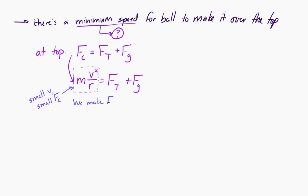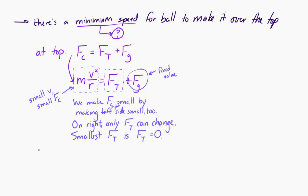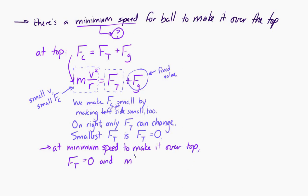For the left-hand side to be small, the right-hand side must also be small. The only thing on the right side that can change is the tension force — weight is fixed since we can't change mass or G. The smallest the tension force can be is zero. So the condition for minimum speed at the top is when the centripetal force equals the gravitational force: MV² / R = Mg.